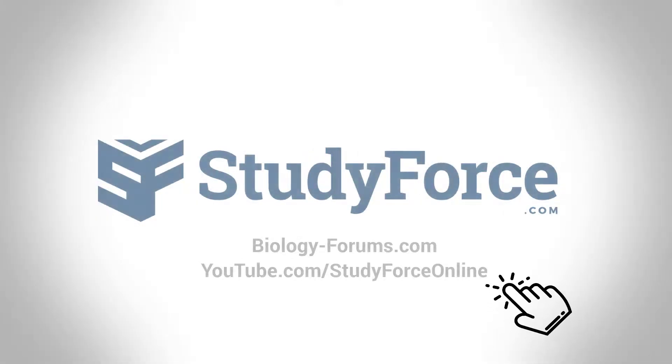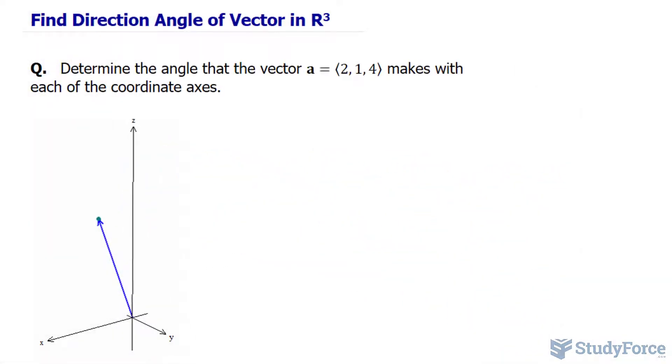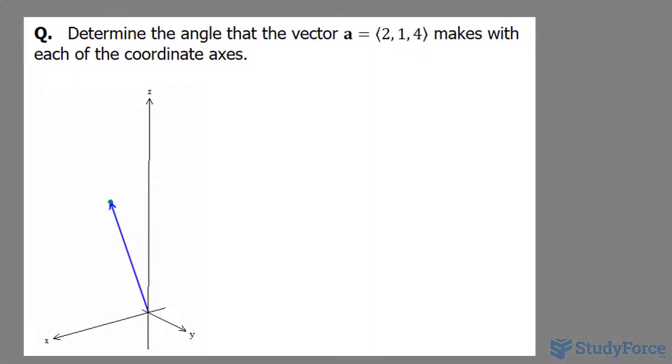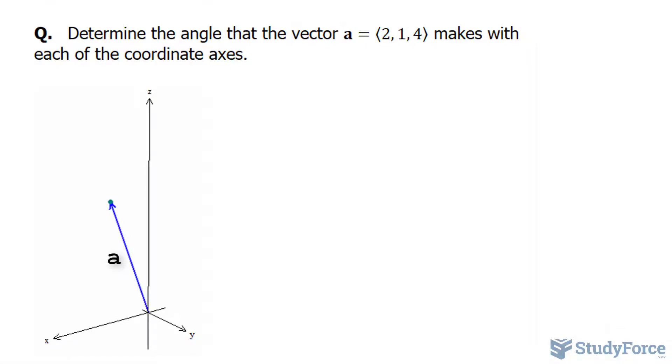In this quick lesson, I'll show you how to find the direction angle of a vector in R3. The question reads: determine the angle that the vector with components 2, 1, and 4 (vector a) makes with each of the coordinate axes.